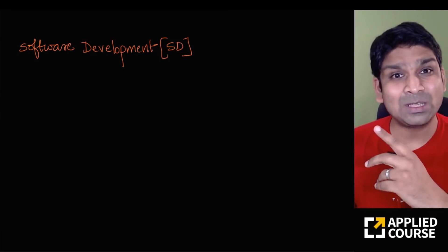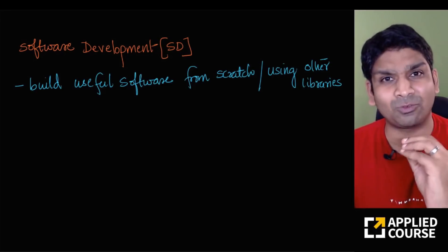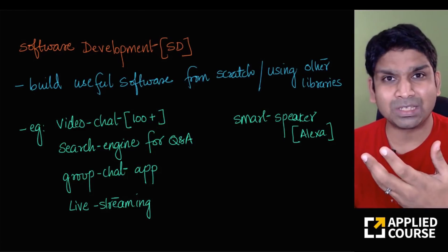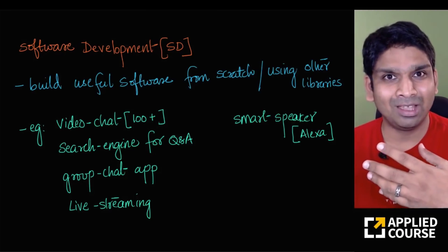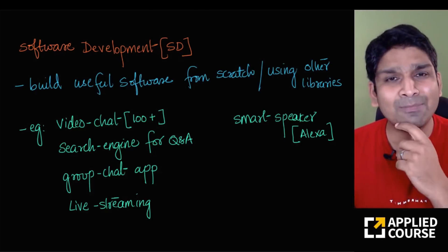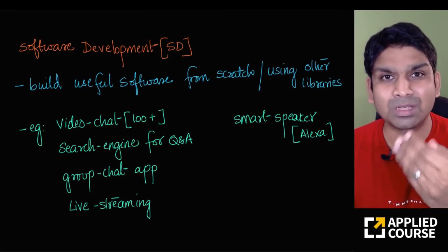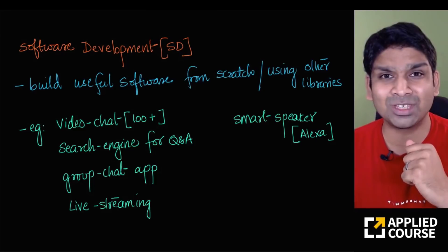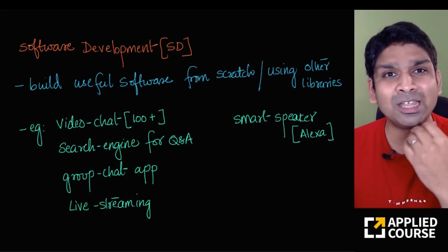Software development is slightly different. The objective is to build useful software from scratch or by using other libraries and modules. For example, you might want to build a video chat application like Zoom that can accommodate up to 100 people, or a small search engine for your company. We've actually done a four-part live session where we built a production-ready search system, which you can watch on our YouTube channel.